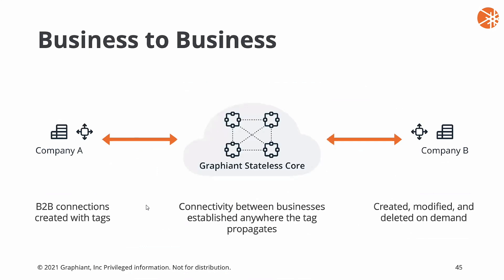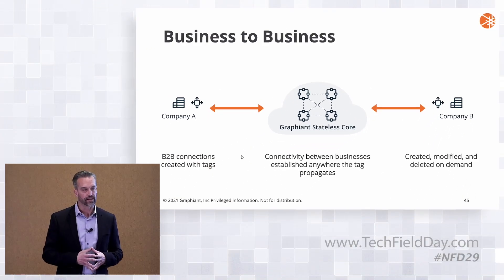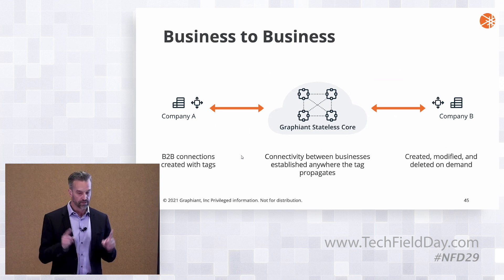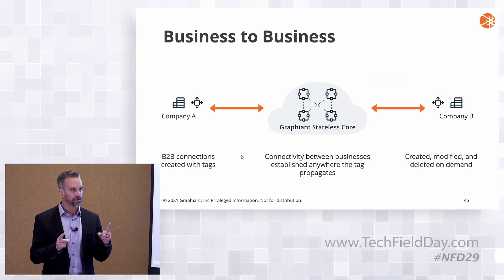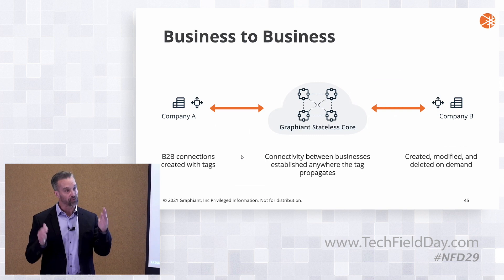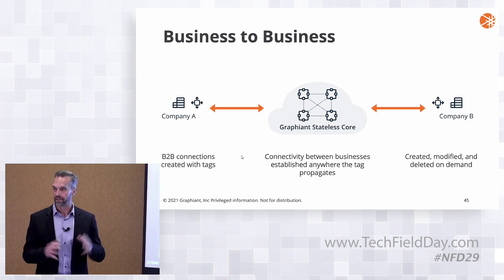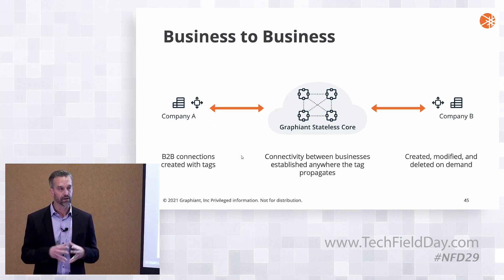What we've built with the ability to use metadata tags and program paths based on those tags is very clean business-to-business connectivity. Now all we need to do is program a tag across the Graphene stateless core to map those connections together. You're still going to want firewalls on your side to control that traffic, but we take care of that mapping in the middle for you.